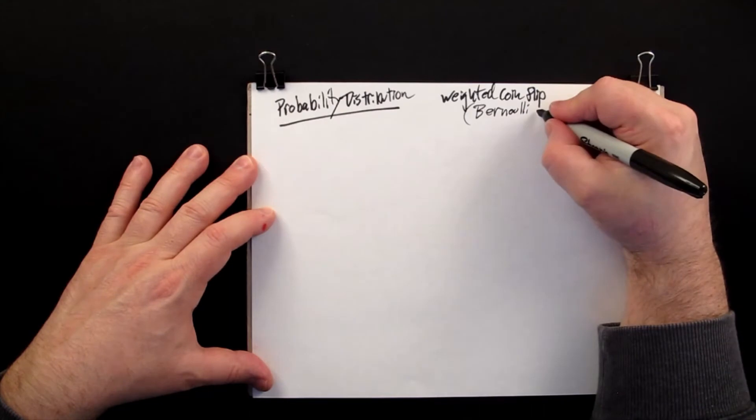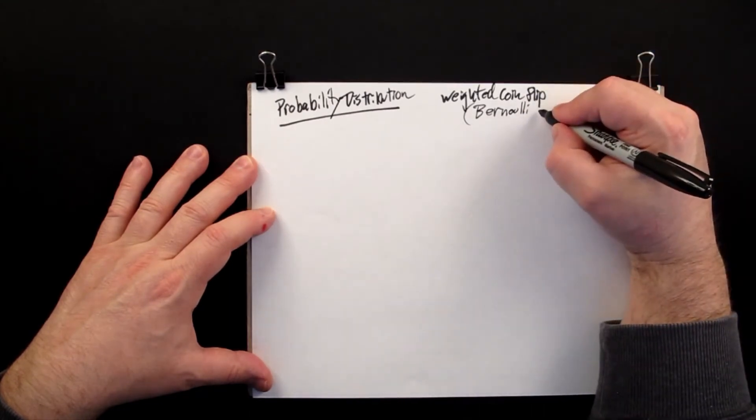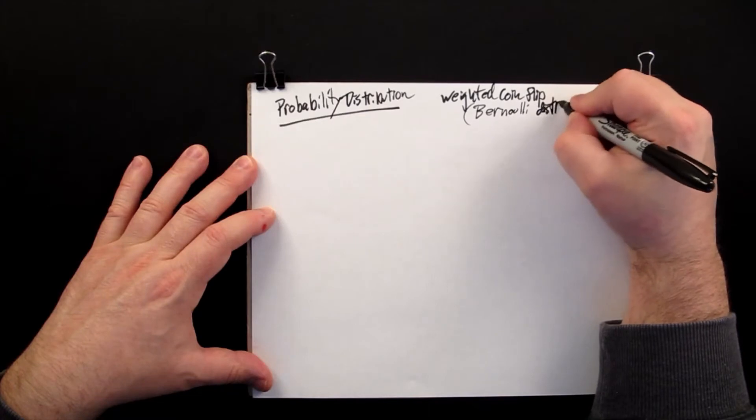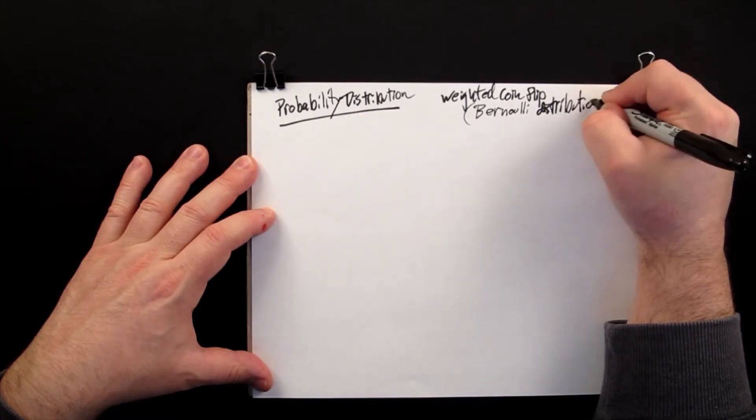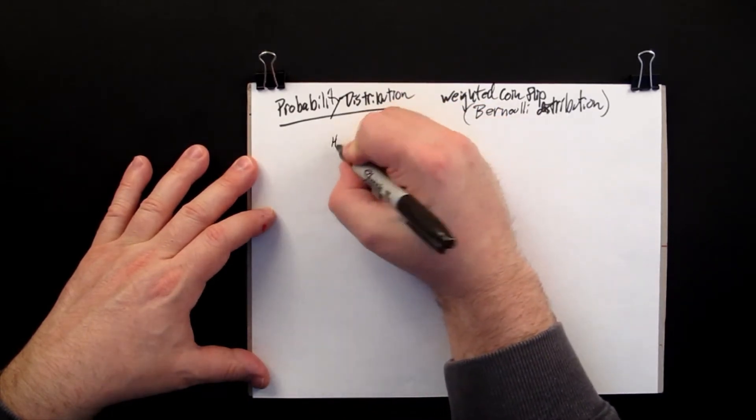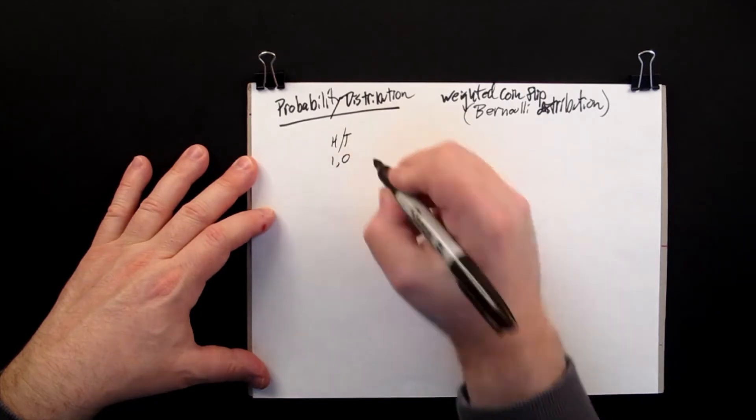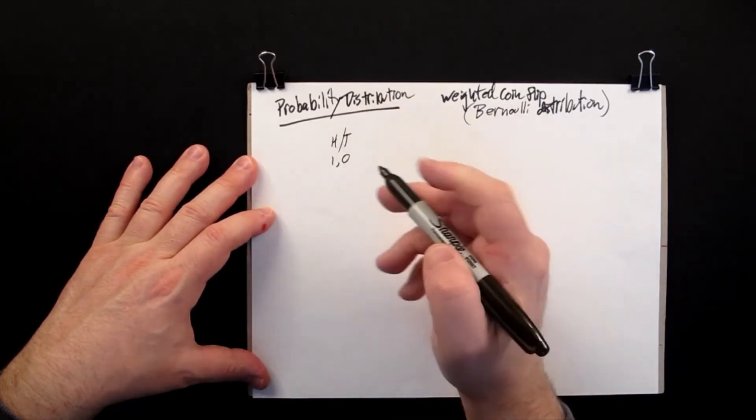So this could be Bernoulli random variable, Bernoulli event, Bernoulli distribution. But it's describing a coin flip. So we have, again, heads or tails being encoded this time by 1 or 0. You can use a different encoding.